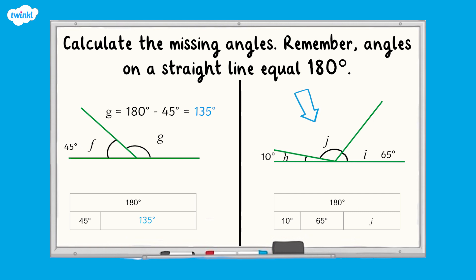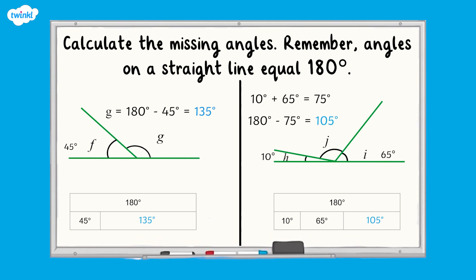To work out the size of angle J, we need to first add together the two known angles. 10 degrees add 65 degrees is equal to 75 degrees. To calculate angle J, we then need to subtract this from 180 degrees. 180 degrees subtract 75 degrees is equal to 105 degrees. Angle J is therefore 105 degrees.